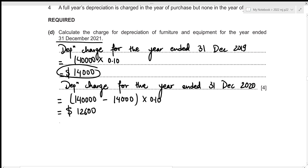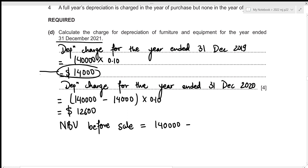Now we figure out the net book value before the sale at 31st December 2020: cost of $140,000 minus accumulated depreciation of 14,000 + 12,600 = $26,600. So net book value before sale = 140,000 − 14,000 − 12,600 = $113,400.